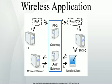WTLS, an optional layer, provides a public key cryptography-based security mechanism similar to TLS. WTP provides transaction support, reliable request-response, adapted to the wireless world. WTP supports more effectively than TCP the problem of packet loss, which occurs commonly in 2G wireless technologies in most radio conditions, but is misinterpreted by TCP as network congestion. Finally, one can think of WSP initially as a compressed version of HTTP.